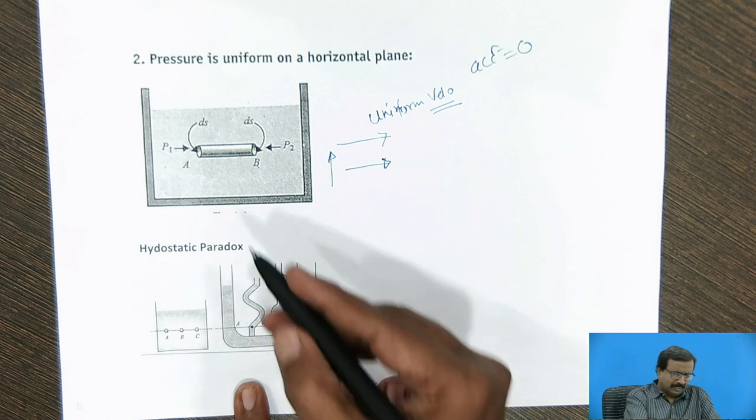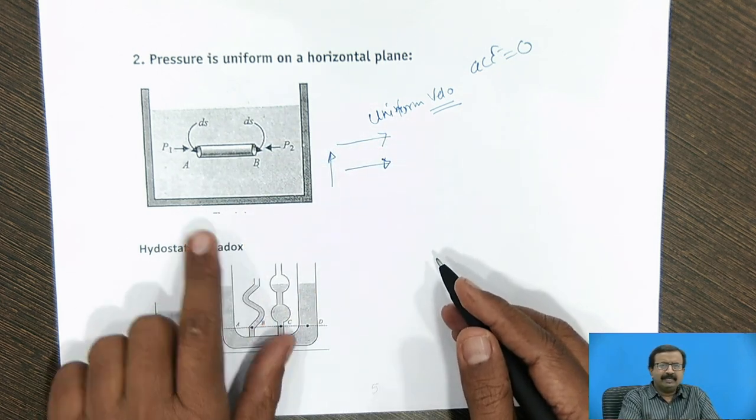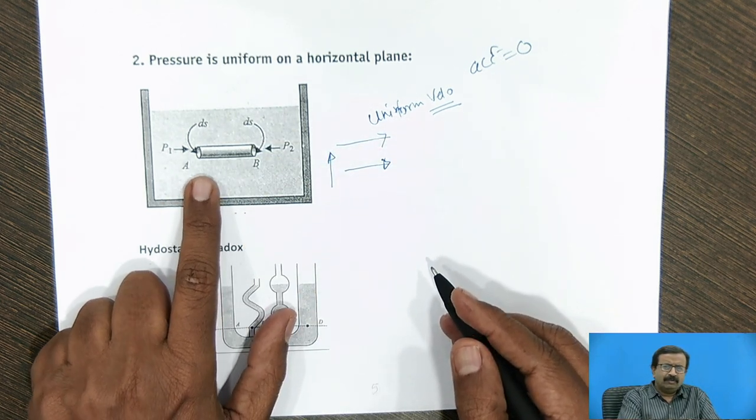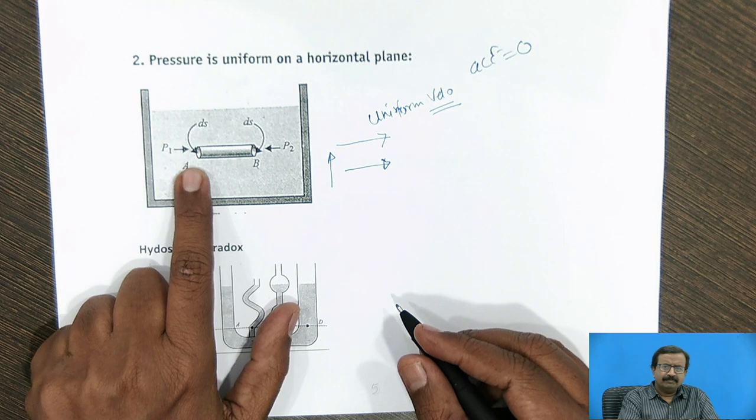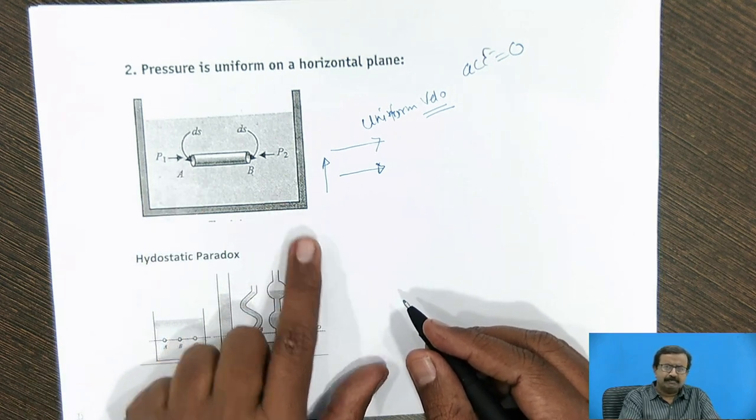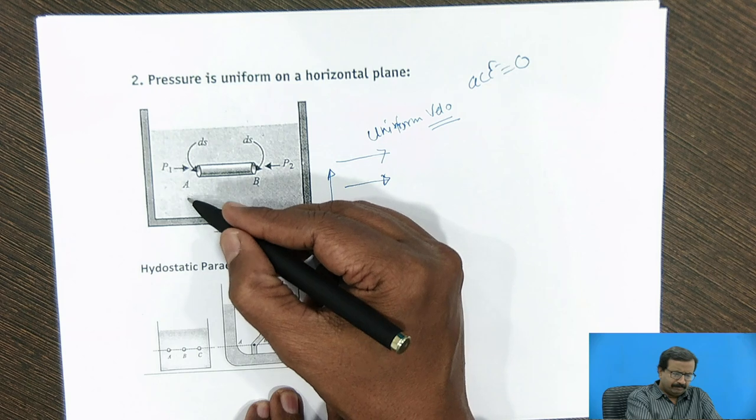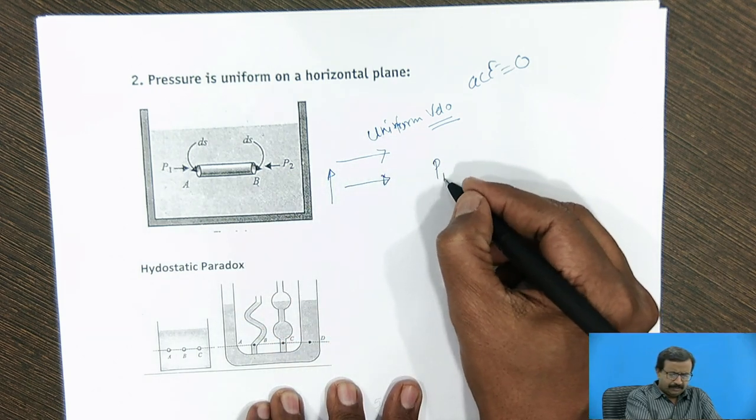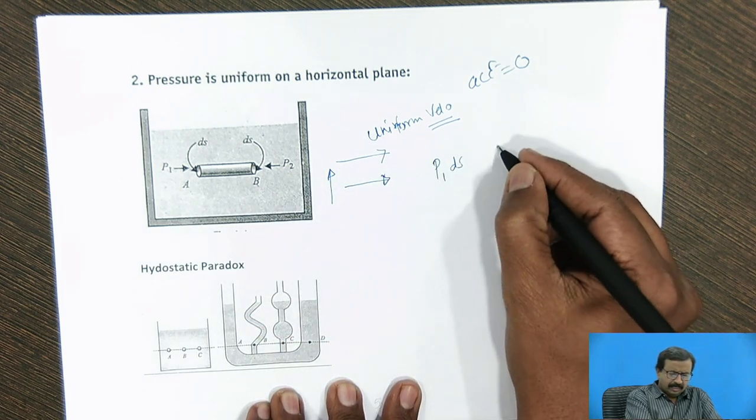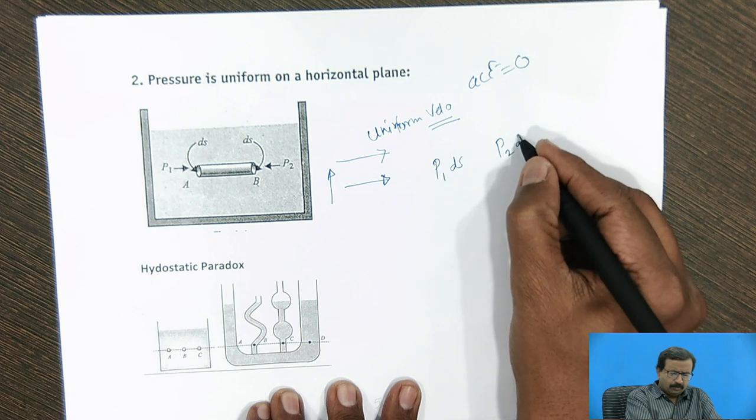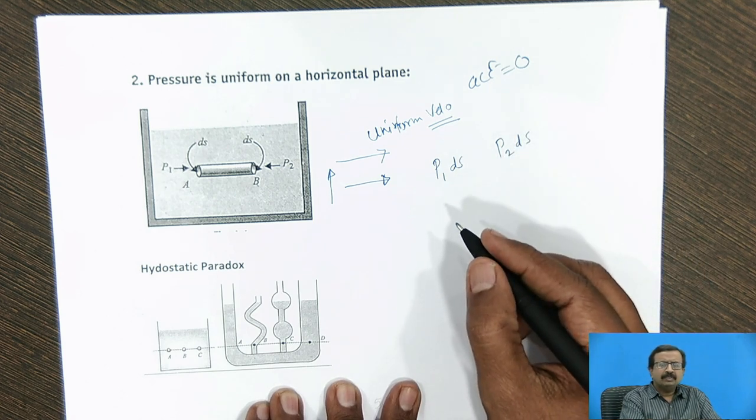Or when the body is moving in a vertical direction and we want to measure the pressure in the horizontal direction, it remains same. Now let us see how it works. Suppose I take the cylindrical element here, where the cross-sectional area is A, pressure here is P1, pressure here is P2. And cross-sectional area is Ds here, point is A and B. So at A, the force is P1 into Ds. At B, force is P2 into Ds.